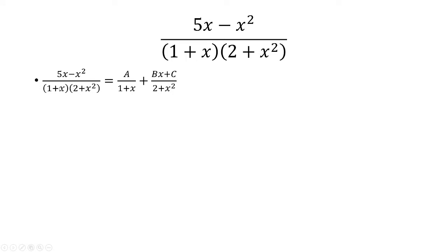Now I'm going to multiply both sides by 1 plus x times 2 plus x squared. So the denominator cancels on the left and the right. Each of the denominators are going to cancel, but we're going to multiply the numerator by the other denominator. So the goal now is to solve for A, B, and C.